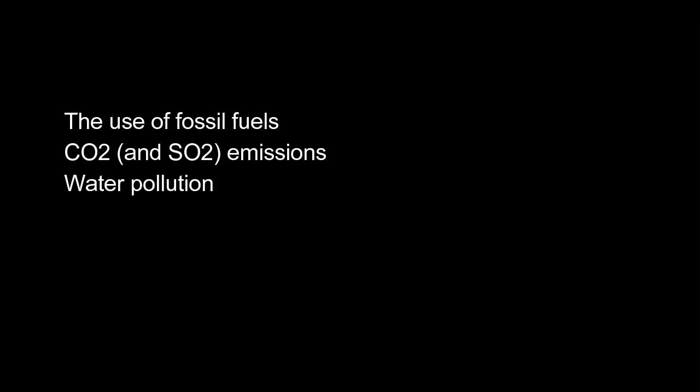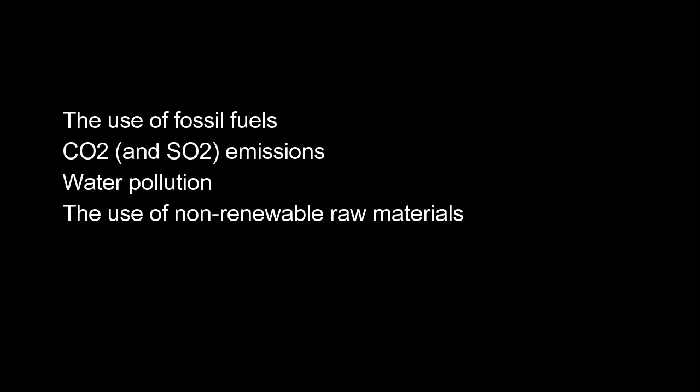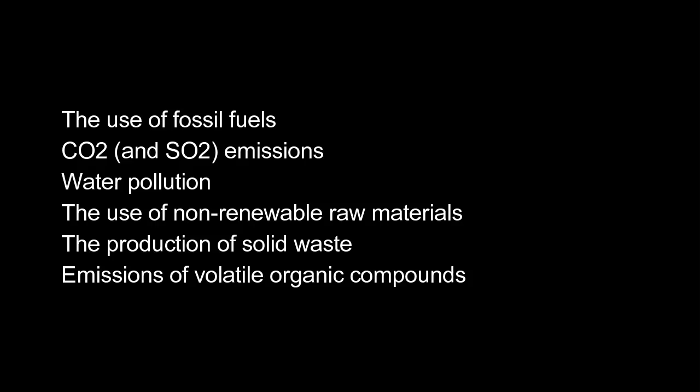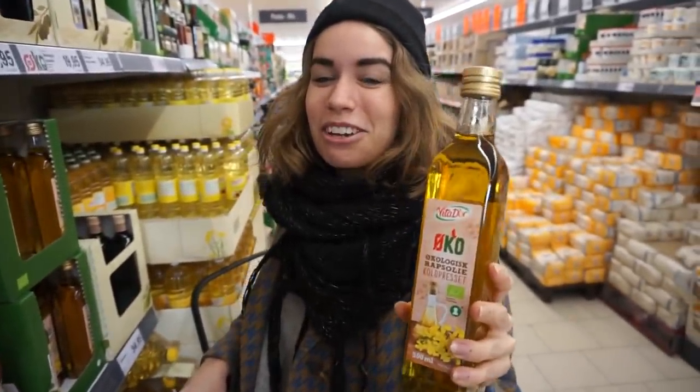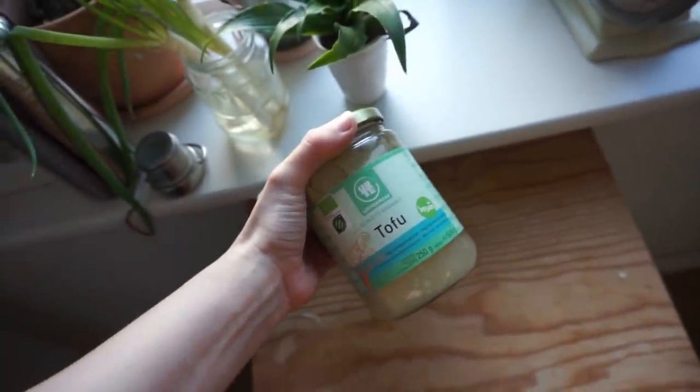The environmental impact of glass production generally includes the use of fossil fuels, CO2 and SO2 emissions, water pollution, the use of non-renewable raw materials, production of solid waste, and emissions of volatile organic compounds used in mirrors and coatings. There's a lot of room for improvement. A lot of glass today is used as disposable everyday packaging, which is something the zero waste community tends to favor, but glass is also used as a reusable product.